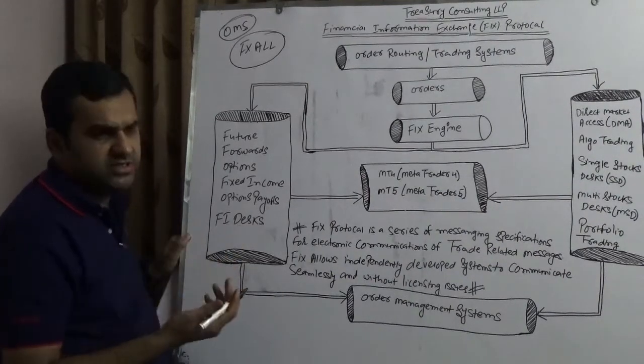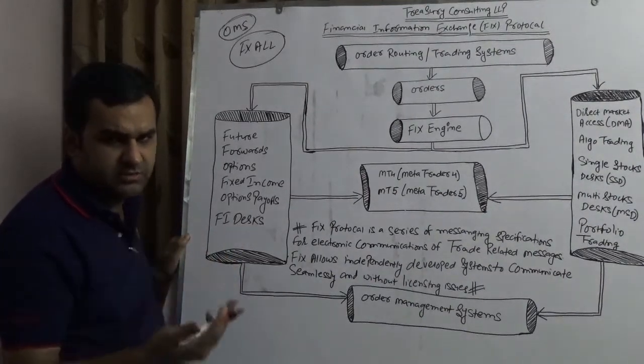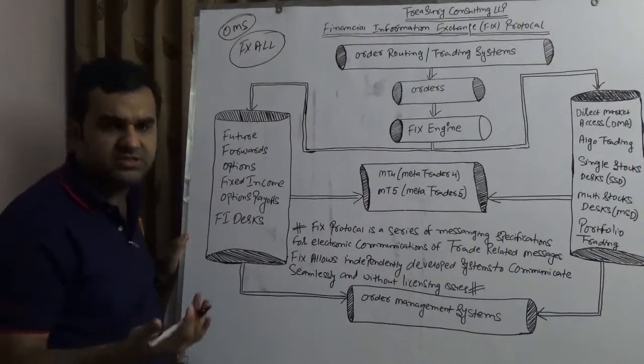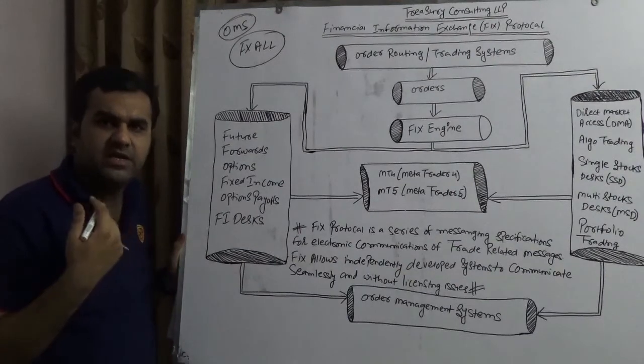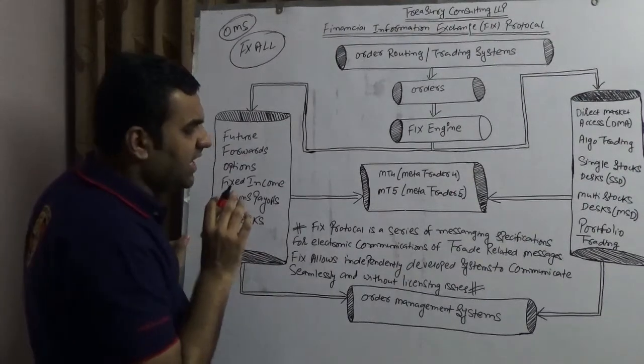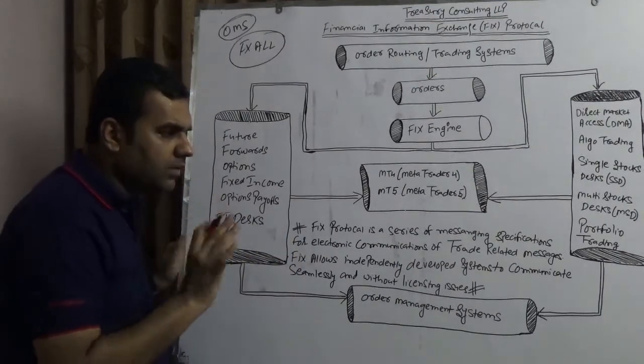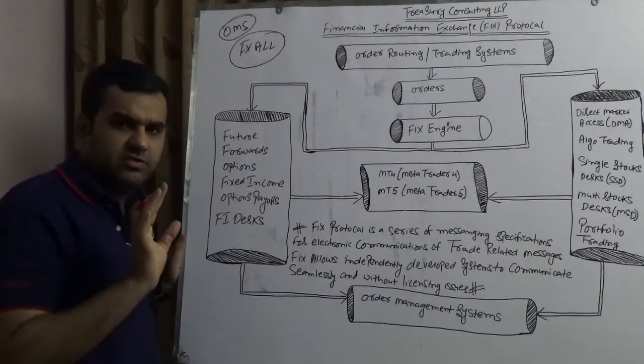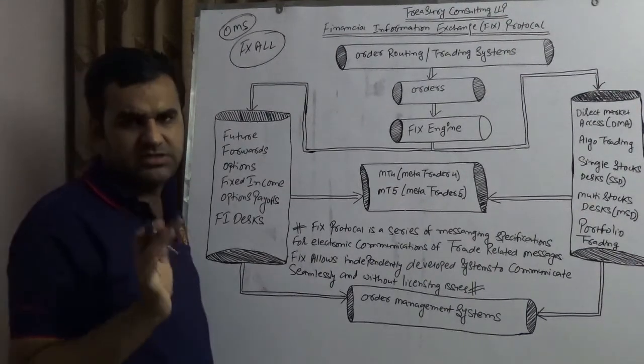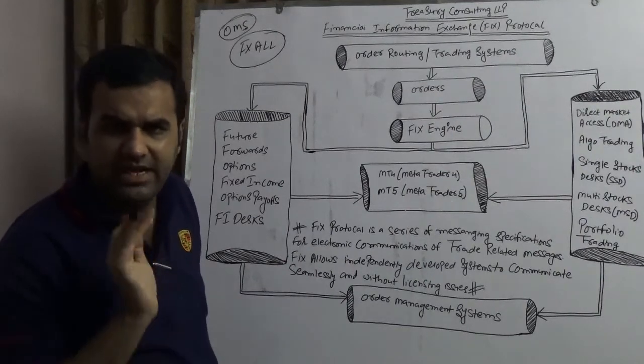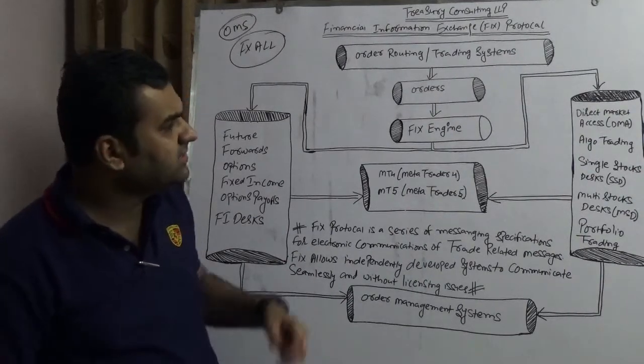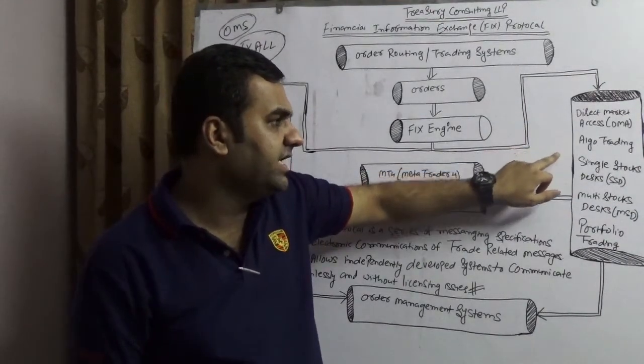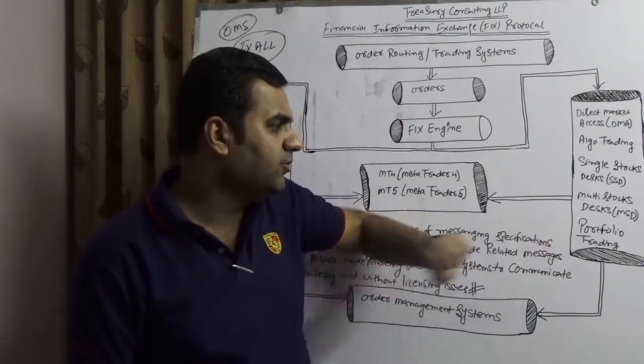So ultimately, on one side you have OMS which is Order Management System. That order management system should have the capability to take orders like futures, forwards, options, fixed income, option payoffs, and fixed income desk. They should take order execution, order settlement, compliance, TCA (transaction cost analysis), pre-trade TCA, post-trade TCA, time analytics, and everything. They have a series of messaging specifications which is open source, so that you can connect with any broker - whether it's JP Morgan Chase, Citibank, HSBC, Deutsche, Morgan Stanley, anyone. Using this you would be able to perform direct market access, algo trading, single stock desk, multi stock desk, and portfolio trading.